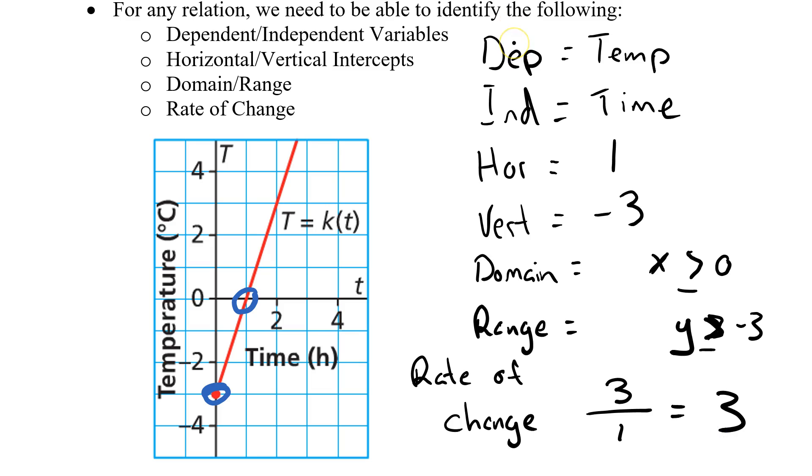So I've got my dependent independent variables, my horizontal vertical intercepts, my domain, my range, and my rate of change. Now if I wanted to, I could take this one next step and talk about what's the formula. I know my generic version of my formula is y equals kx, but in this particular graph I am not crossing the y-intercept at 0.